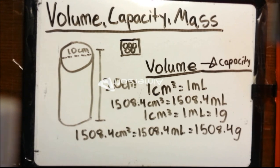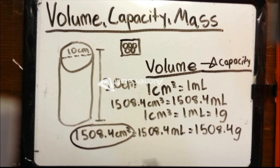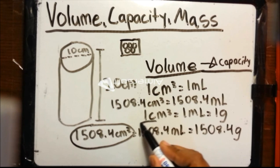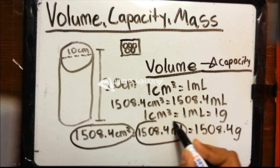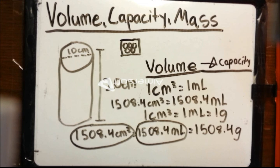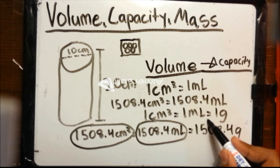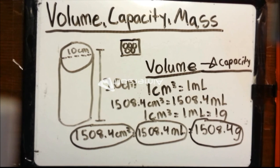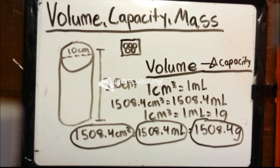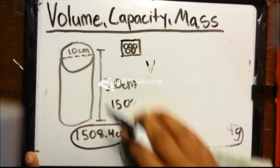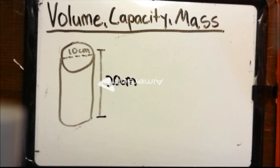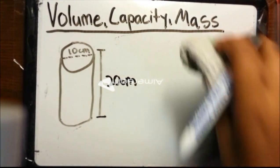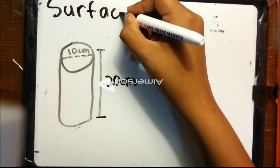To sum up: this cylinder has a volume of 1,508.4 cubic centimeters, it can hold up to 1,508.4 milliliters of water, and when this water is in the cylinder it will weigh 1,508.4 grams in total. If the water wasn't at 4 degrees Celsius, it would weigh less. Now, let's say you need to paint the outside of the cylinder and figure out the total area of paint covering it — you need to find the surface area of this cylinder.